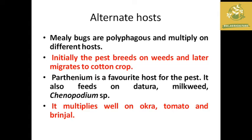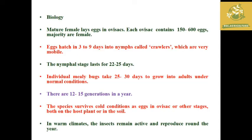In the beginning, the mealy bug breeds in weeds and then migrates to cotton crops. It multiplies rapidly. In biology, eggs hatch in 3 to 9 days. Nymphs develop and there can be 12 to 15 generations per year.